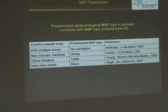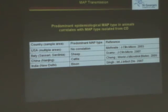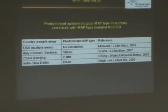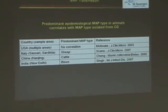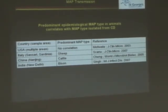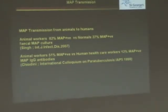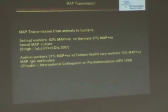Looking at the data, there are places in the world where there are predominant epidemiological MAP types. In Sassari, Sardinia, the most predominant type is a sheep type. If we look at samples from New Delhi — from Singh's data — we see bison types. And if we then look at Crohn's patients from these particular areas, we see exactly the same predominant type found in the Crohn's patients as we do in the animals. Furthermore, animal workers who actually work with MAP are significantly more likely to be infected with MAP — this is obvious transmission.